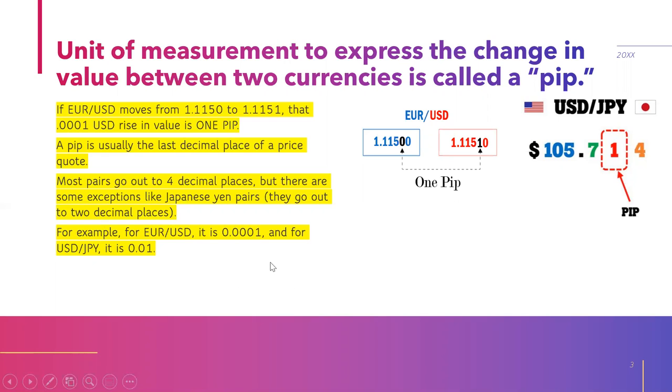For example, for the EUR/USD the pip value is 0.0001, and for the USD/JPY it is 0.01.